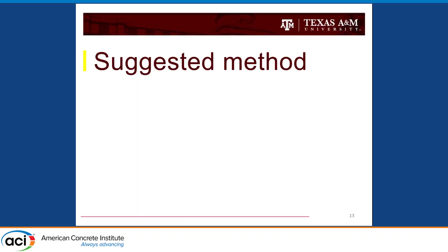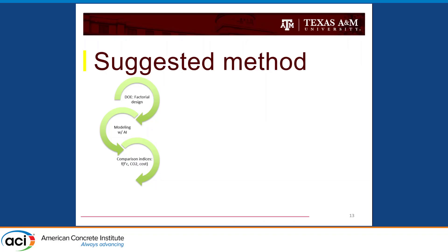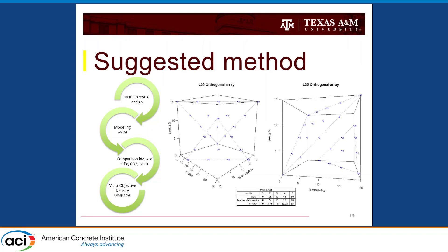I won't go into too much detail on the model itself since this was covered in a previous presentation, but to give some context: the method we used to optimize the UHPC mix during my dissertation was to design experiments using orthogonal arrays to reduce experimental runs, then model it with machine learning. The orthogonal array is used to collect strategic points in our domain so we can model the behavior of the material within that domain of mix proportions.